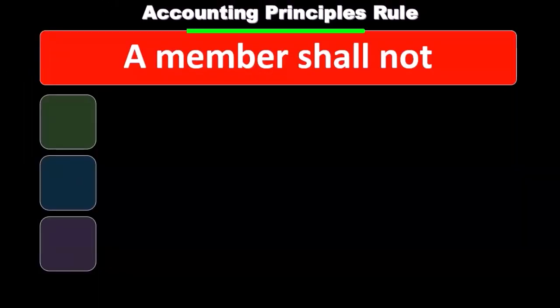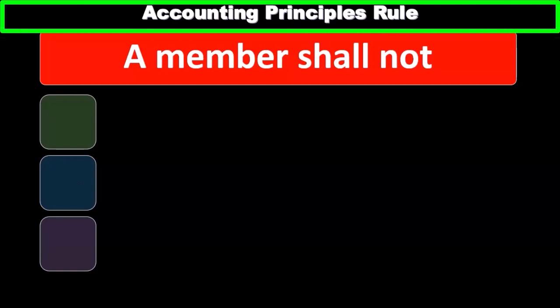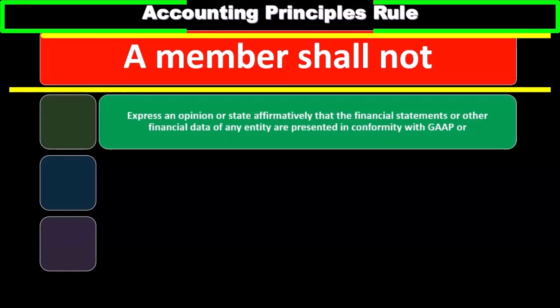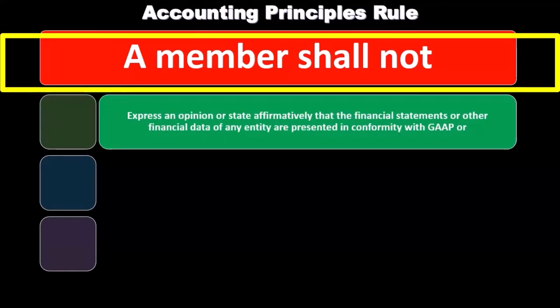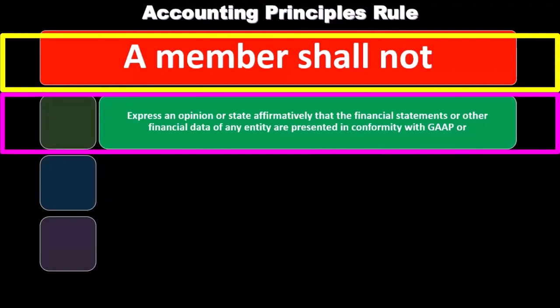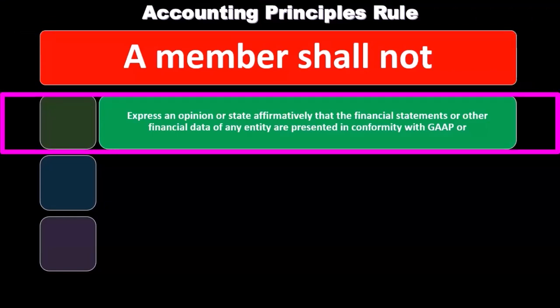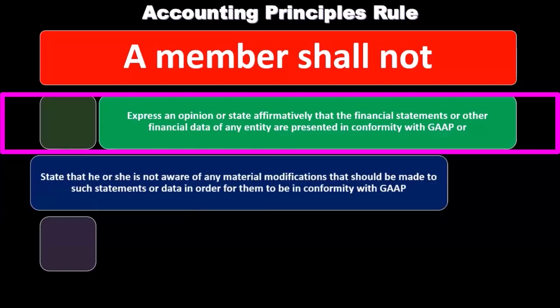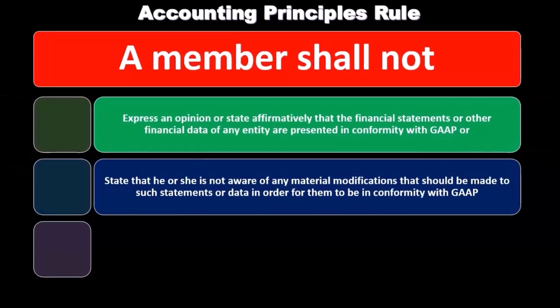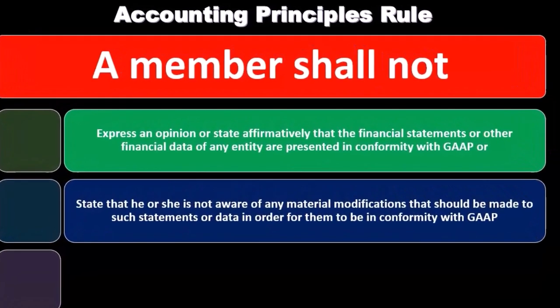Now we'll discuss accounting principles and rules. A member shall not express an opinion or state affirmatively that the financial statements or other financial data of any entity are presented in conformity with GAAP — generally accepted accounting principles — or state that he or she is not aware of any material modifications that should be made to such statements or data in order for them to be in conformity with GAAP.